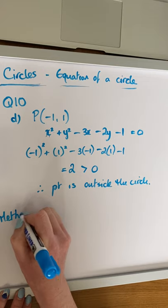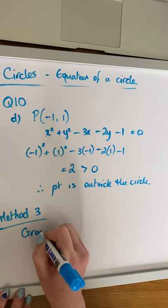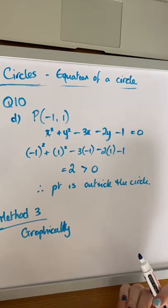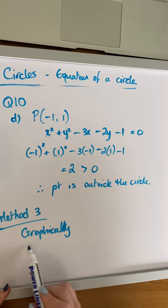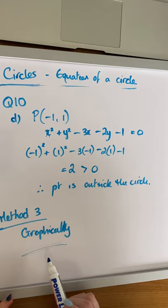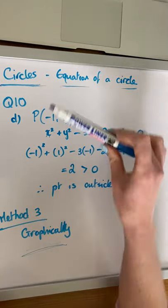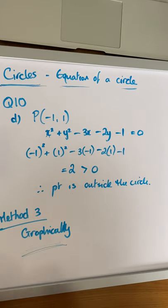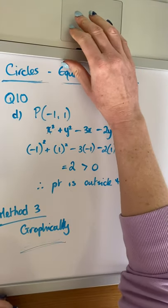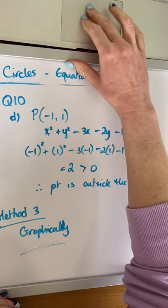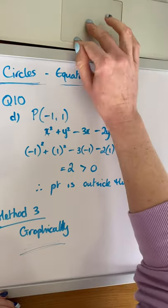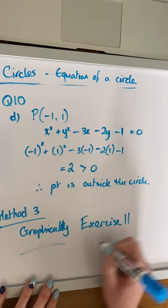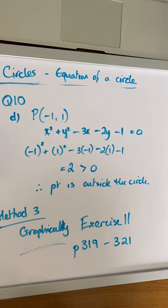Method 3, if you had the time, is graphical — if you draw the circle, you can investigate whether a given point is inside, outside, or on the circle. The only problem is you have to be extremely accurate, and most of the time they're going to ask you to solve questions algebraically. So that's our basics of the circle. Have a look at the video, and complete the questions on pages 319 to 321, exercise 11.